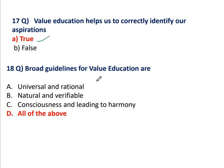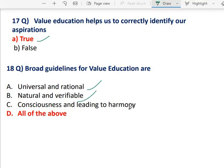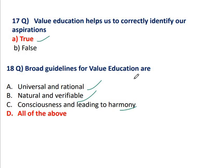Question 18: Both guidelines for value education are universal, rational, natural and very favorable, and consciousness leading to harmony. Value education can be universally acceptable, rationally logical, naturally accepted, and harmony can be boosted. So all of the above is the correct answer.